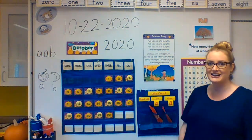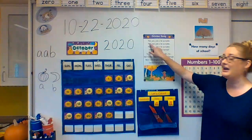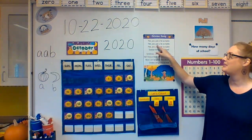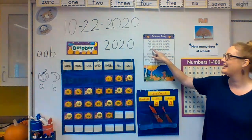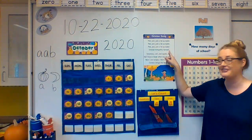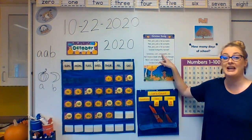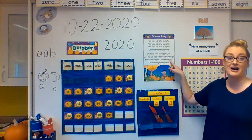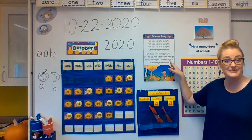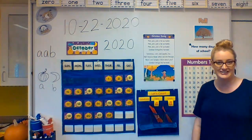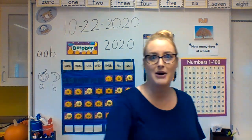Let's sing our October song. Pick, pick, pick a fat pumpkin. Pick, pick, pick a fat pumpkin. Pick, pick, pick a fat pumpkin. Picking in October brings the harvest. Tomatoes, corn, and apples too. We'll have a feast when we are through. Now I'm hungry. How about you? October brings the harvest. Great work, friends. I will see you tomorrow for my favorite day of the week, Friday.